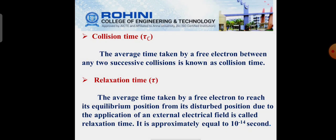Next one, collision time. The average time taken by a free electron between any two successive collisions is known as collision time. Next one, relaxation time. The average time taken by a free electron to reach its equilibrium position from its disturbed position due to the application of external electric field is called relaxation time. This relaxation time is approximately equal to 10 power minus 14 second.